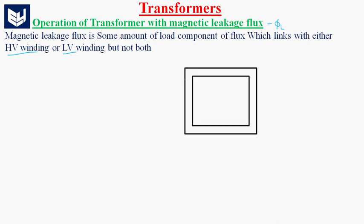This is the magnetic core of the transformer. It has two windings — one is called the primary winding and the other is called the secondary winding. A winding connected to the source is called the primary winding, and a winding connected to the load is called the secondary winding. Whenever the source is connected, a no-load component of current will flow, and the primary has N1 number of turns, so E1 is the EMF induced.